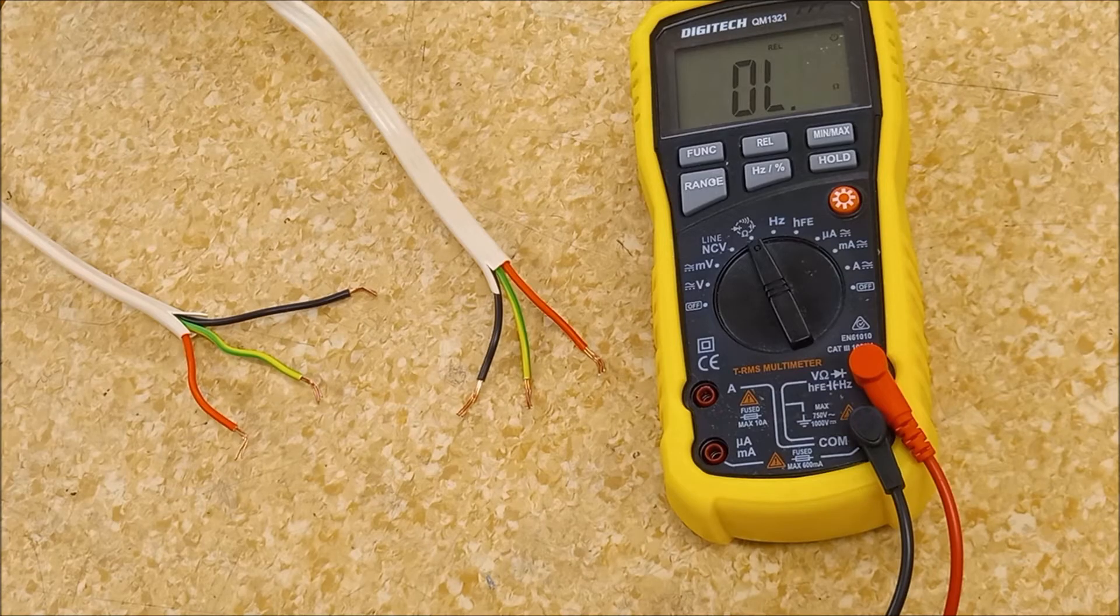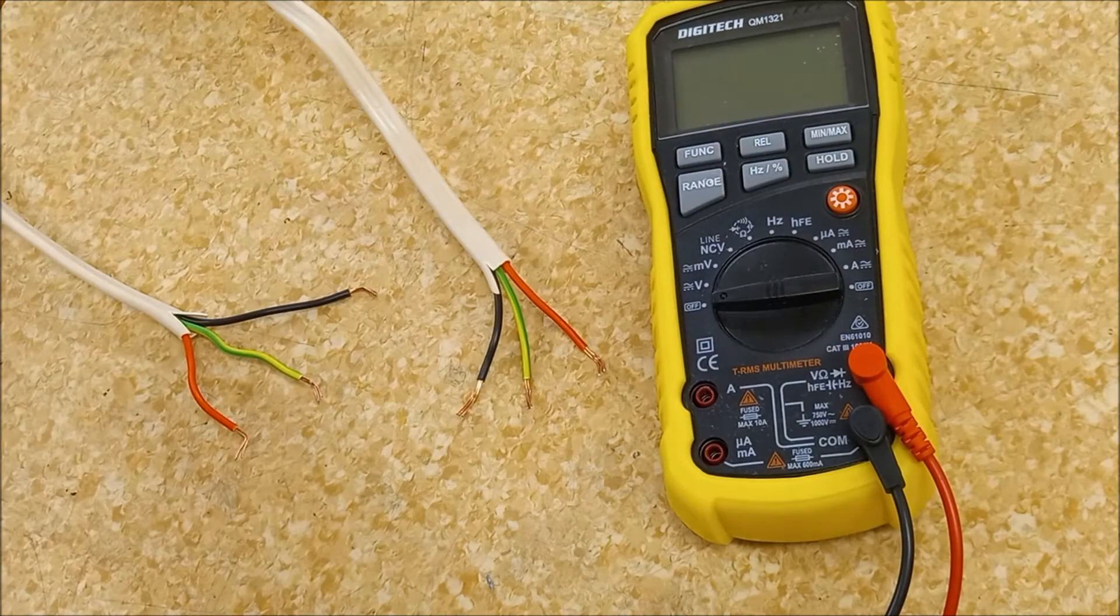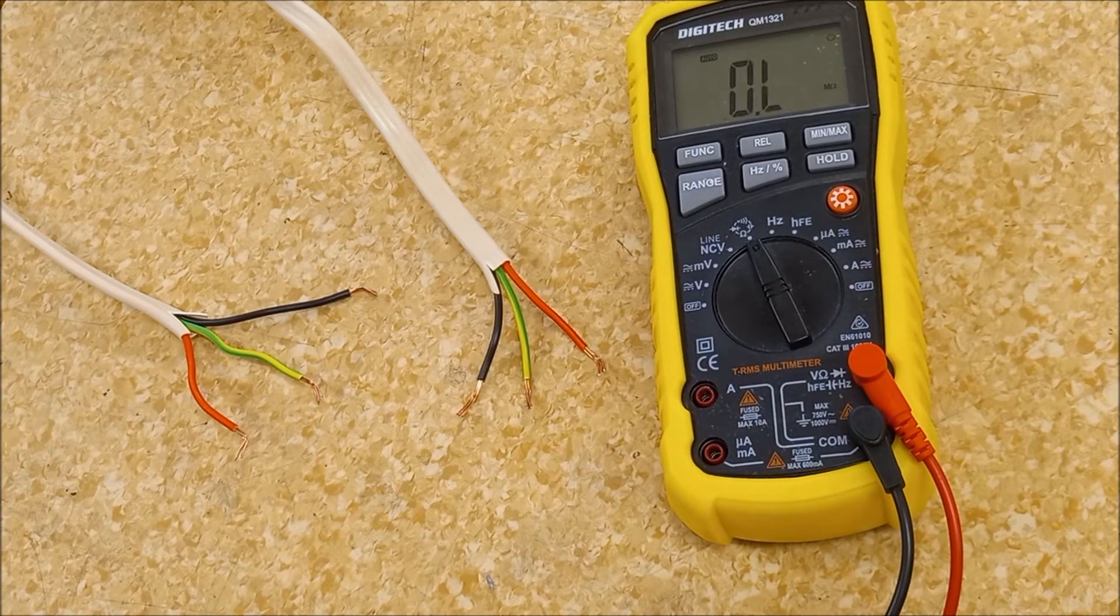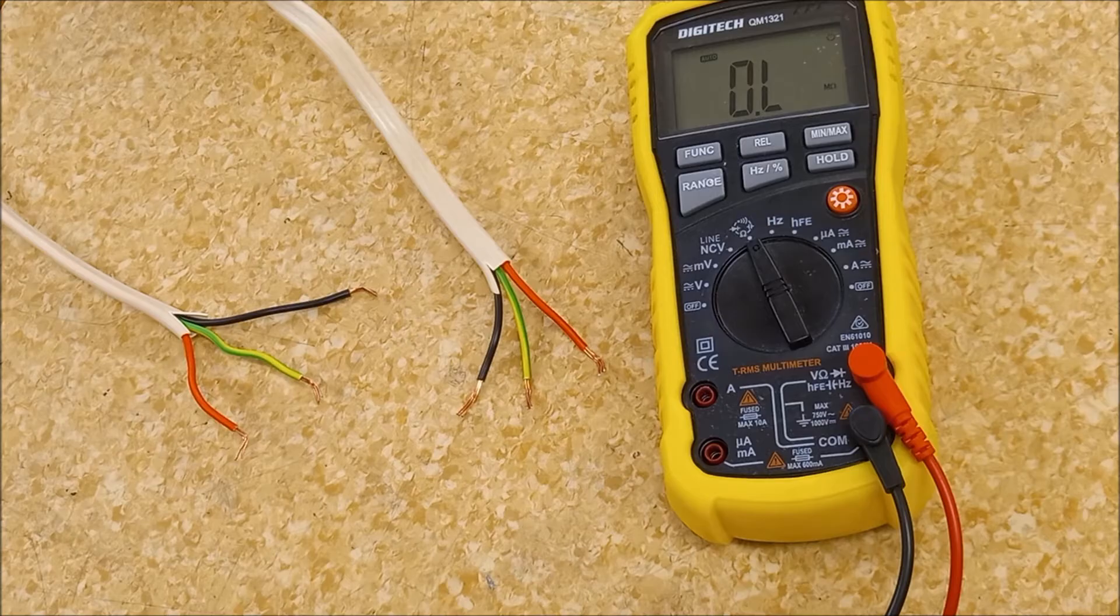This is what this is designed to check. Our meter is set on the low ohm scale. It's important you choose the low ohm scale because we're only checking to make sure that it's very low resistance.